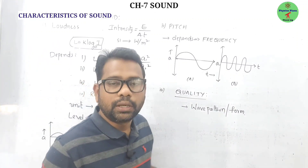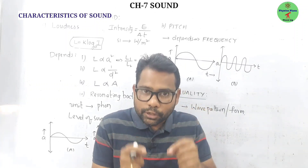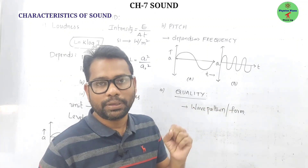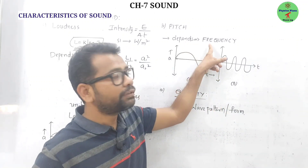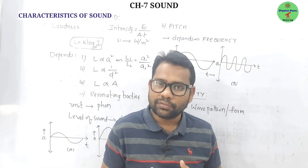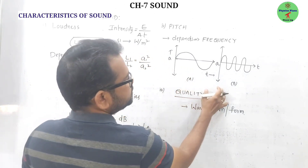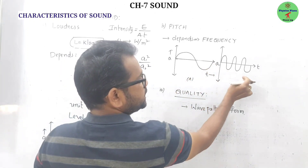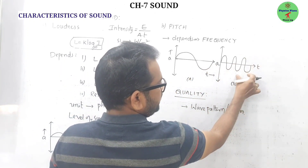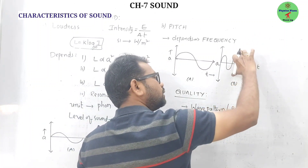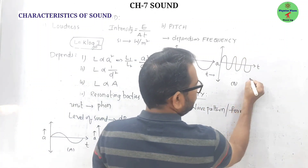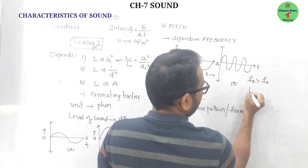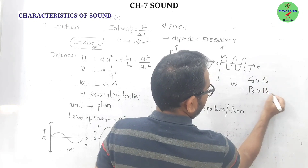Pitch is the characteristic of sound by which we can distinguish an acute note from a grave one. Pitch depends on frequency — more frequency means more pitch, less frequency means less pitch. If two waves have the same amplitude and wave pattern but wave B has more waves per second, then frequency of B is greater and therefore pitch of B is greater.